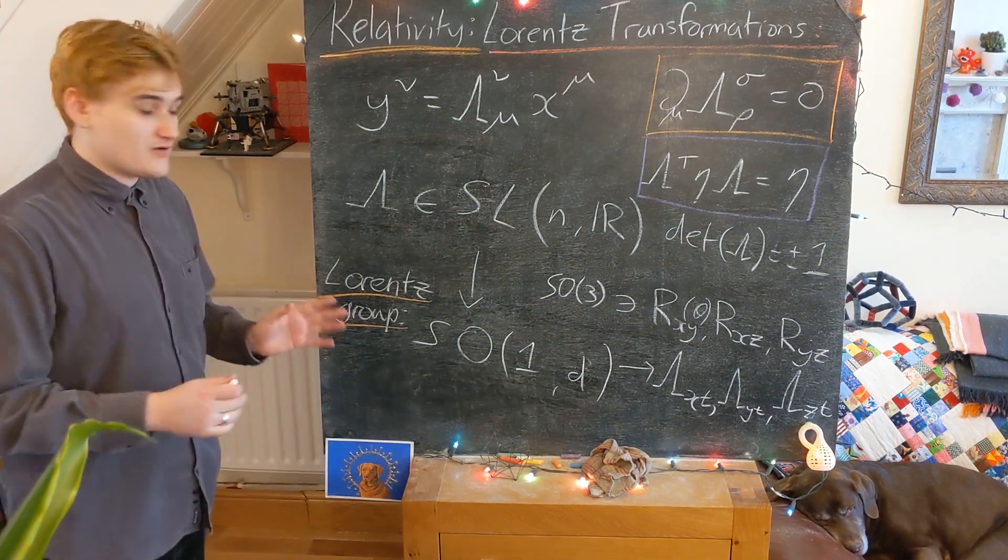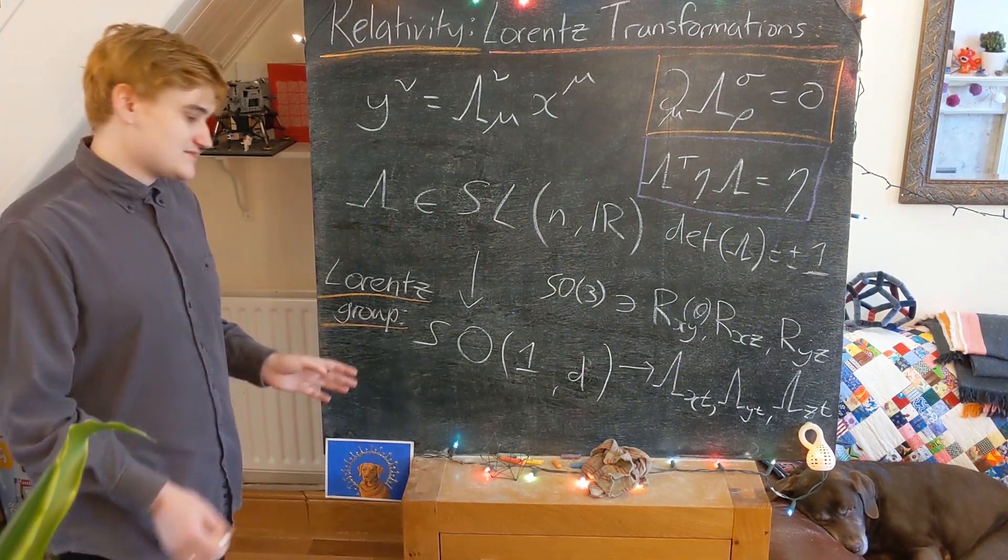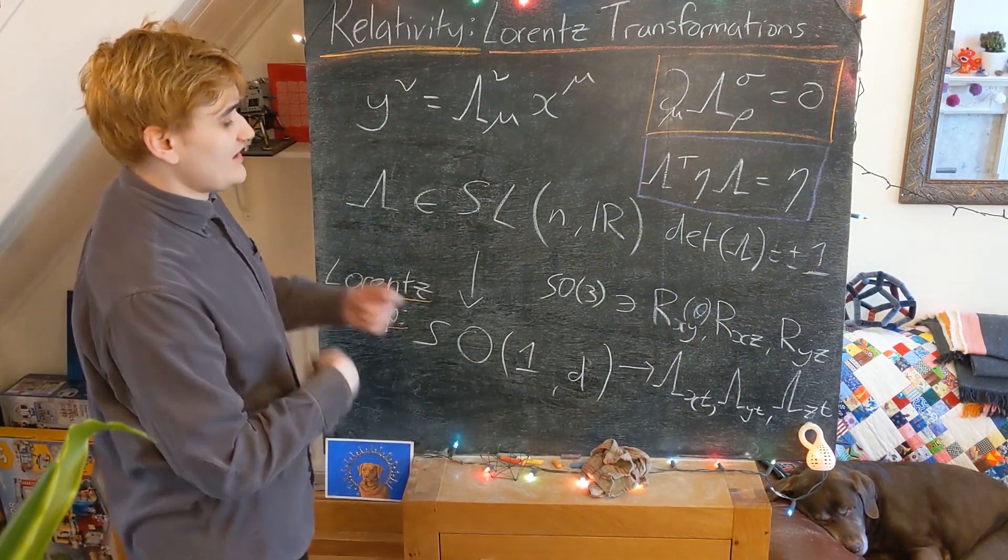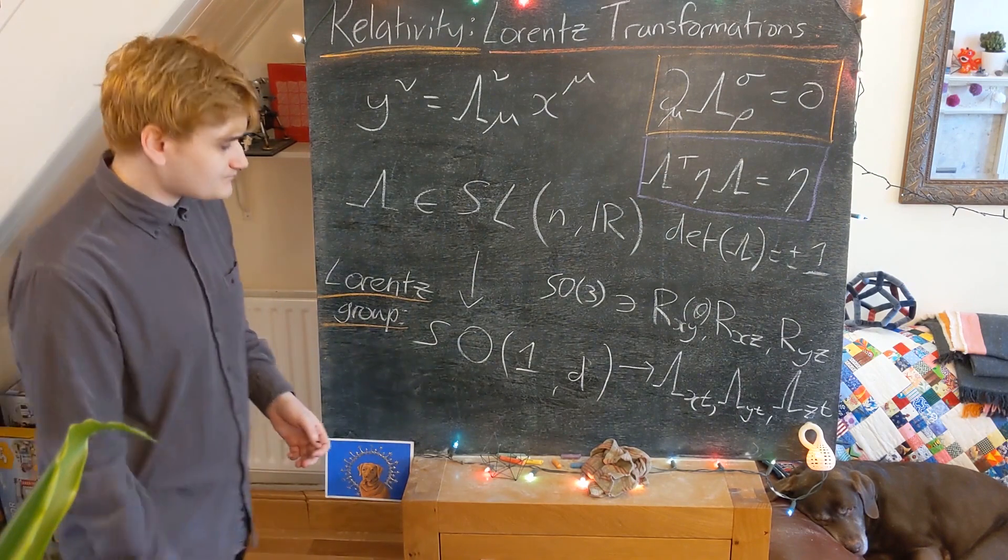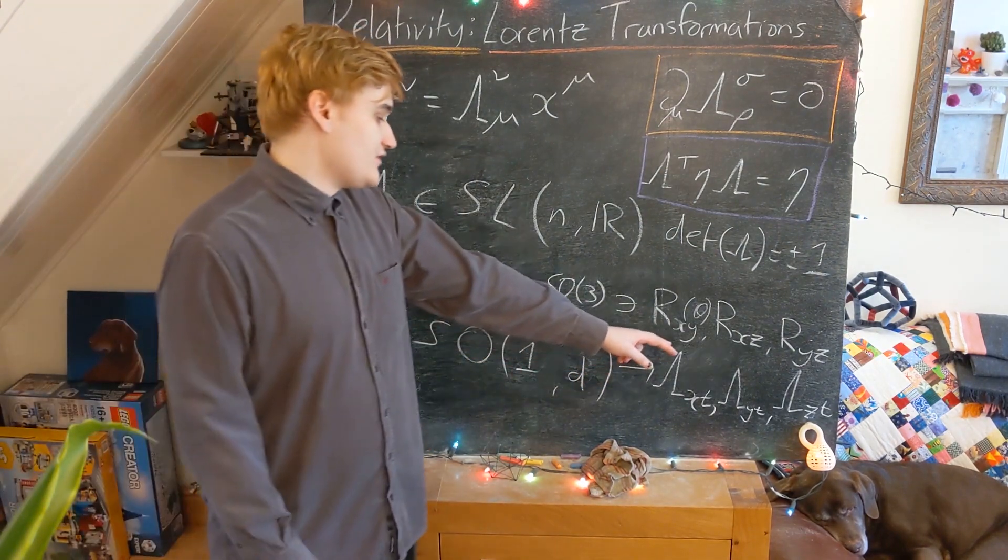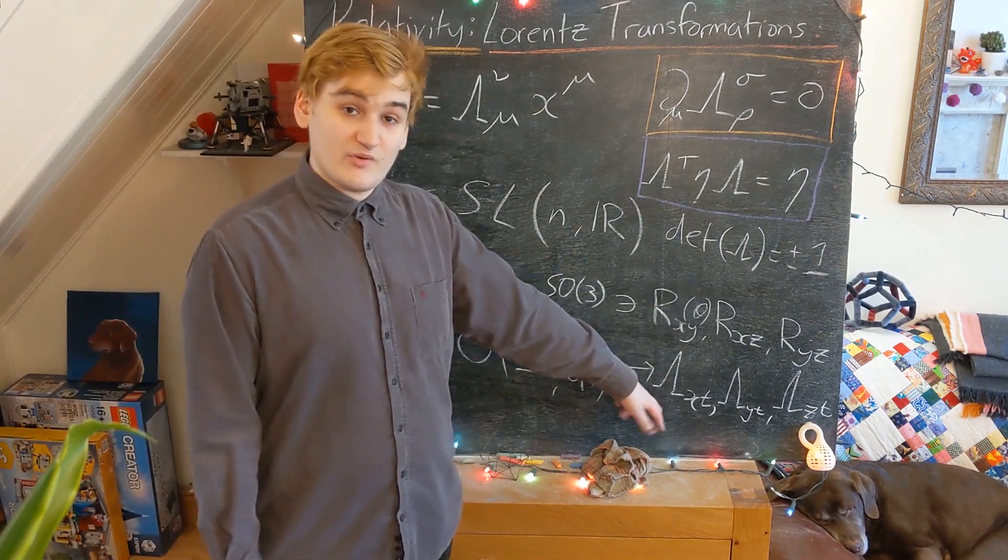Already, knowing a few things about group theory, we can then realize some things. For example, the composition of now two Lorentz transformations is going to be another Lorentz transformation. We're going to be able to derive, say, what happens if you compose a rotation and then a boost.